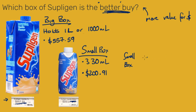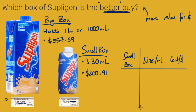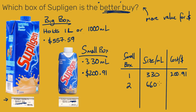For the small box I'm going to write the size in milliliters and the cost in dollars. I'm going to try to get that 330 milliliters as close to a thousand milliliters as possible. One small box is 330 milliliters and costs 200 dollars and 91 cents. Two small boxes is two times 330, which is 660 milliliters, and that costs 401 dollars and 82 cents.